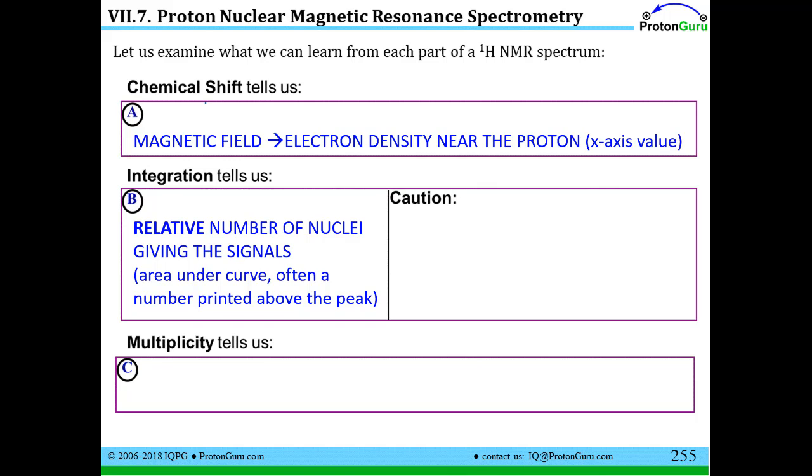Then we have the integration, this little number that's printed above the peak in a lot of simple spectra. This tells you the relative number of nuclei that give each signal. You have to have some caution when looking at these. In simple spectra, especially for courses at the introductory level, often you just see the actual number of protons responsible for a peak printed above the signal. But if you take real spectra and you're doing lab work, the real spectra can even have fractional values. Because again, the spectrometer just gives you a ratio of the areas under the different peaks.